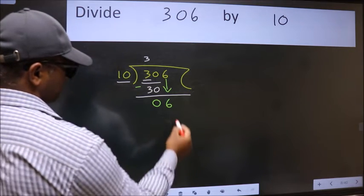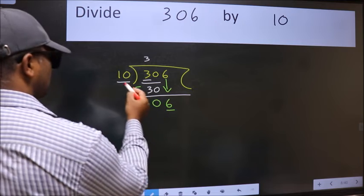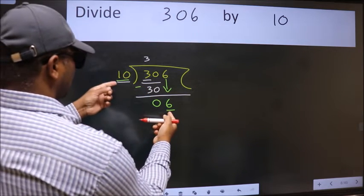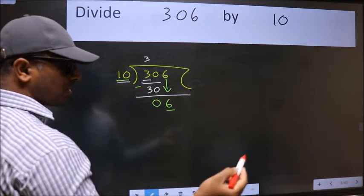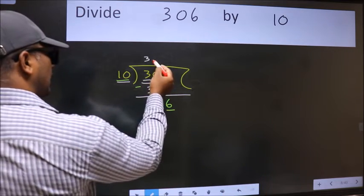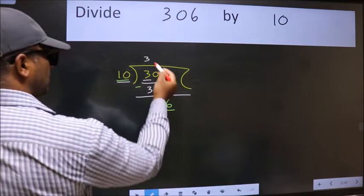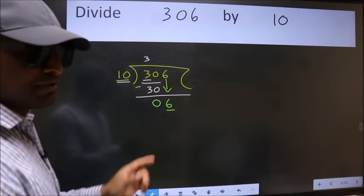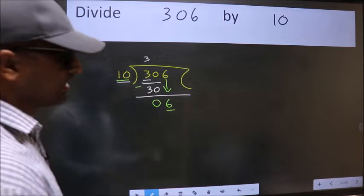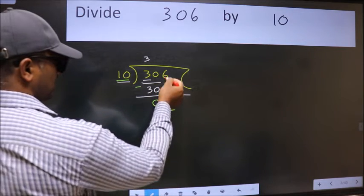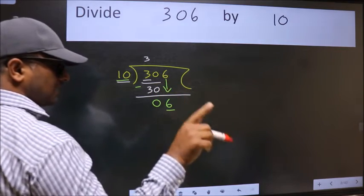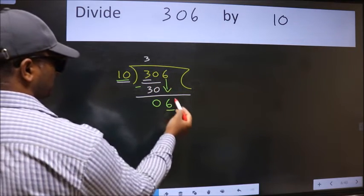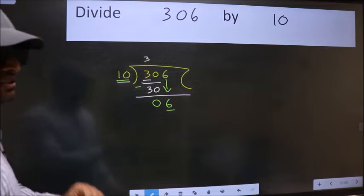And the mistake is this: Here we have 6 and here 10. 6 is smaller than 10. So what many do is they directly put dot, take 0, which is wrong. Why is it wrong? Because just now you brought this number down, and in the same step you want to put dot, take 0, which is wrong.